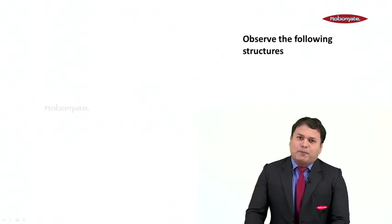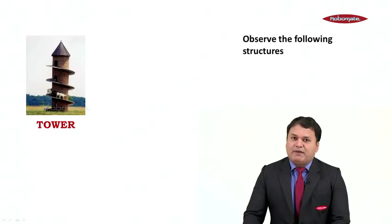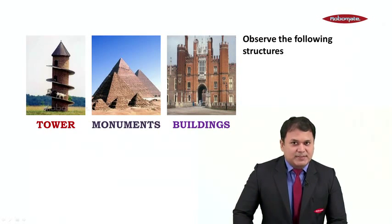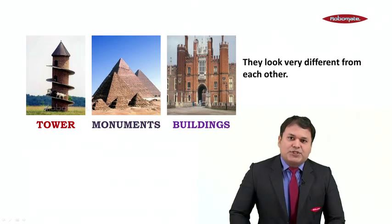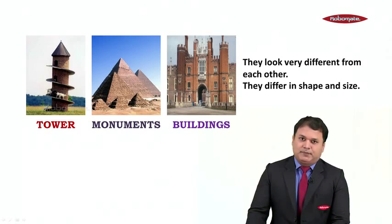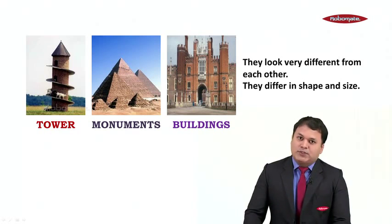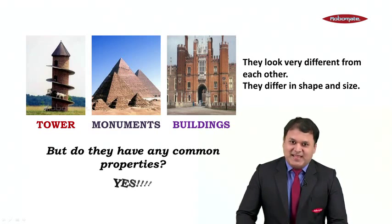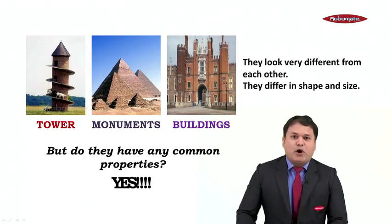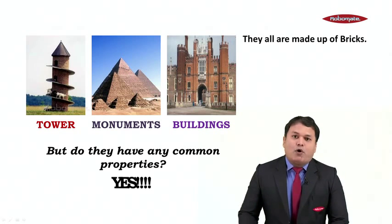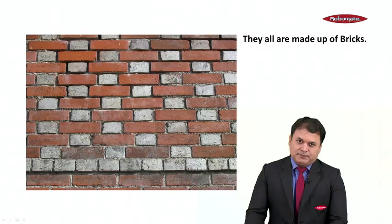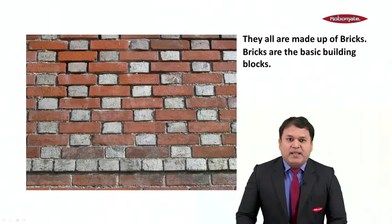Students, just observe the following structures. We have a tower, we have some monuments, and we also have some buildings. Now these structures look very different from each other — they differ in shape and also in size. But do they have any common properties? Yes, they definitely have a basic common property: all these structures are made up of bricks. So we can say that bricks are the basic building blocks of these structures.